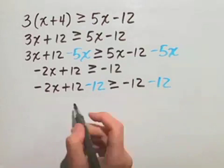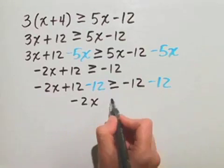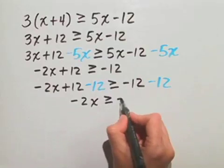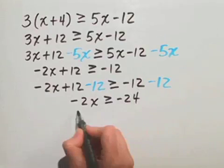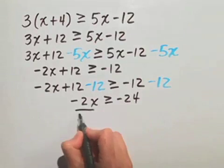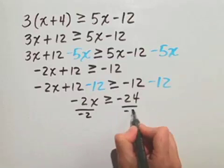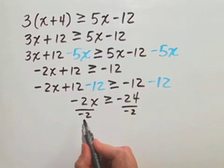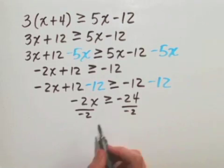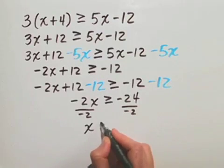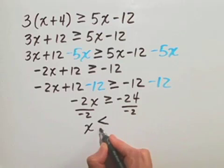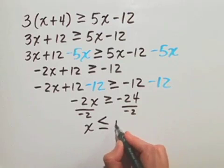And we're left with just negative 2x is greater than or equal to negative 24. We divide both sides of this inequality by negative 2. Remember, when you multiply or divide an inequality by a negative number, you always reverse the direction of your inequality. So x is less than or equal to positive 12.